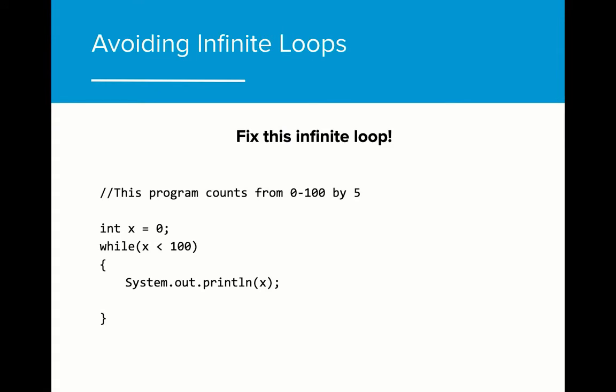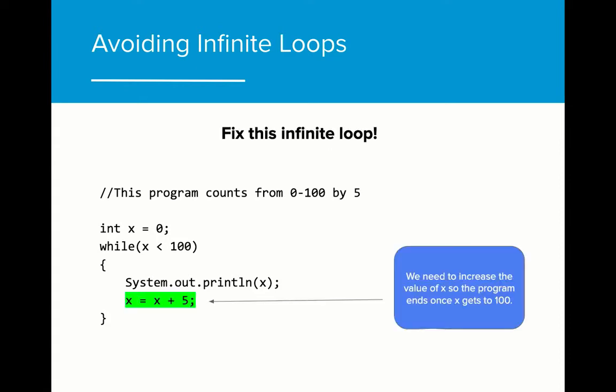Let's get some practice writing while loops. In this problem, figure out what code you need to add in order to get this while loop to stop running forever. For this problem, we need to add a statement that increases the value of x. Without this, the value of x remains zero and the program will run forever. This ensures that x will increase in value on each iteration through the loop.